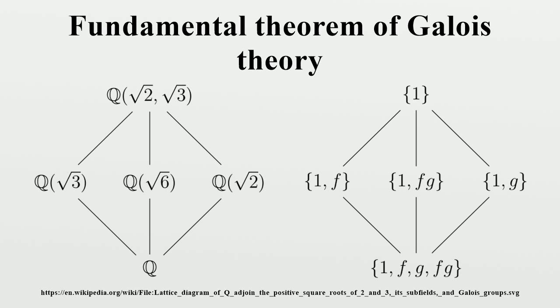These subfields have degree 3 over Q, again corresponding to the subgroups having index 3 in G. Note that the subgroups are not normal in G, and this corresponds to the fact that the subfields are not Galois over Q. For example, Q(θ) contains only a single root of the polynomial X³-2, so it cannot be normal over Q.